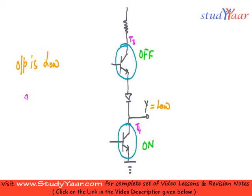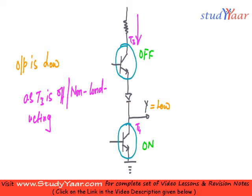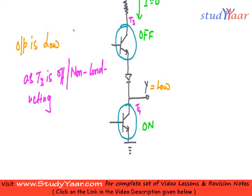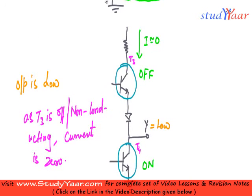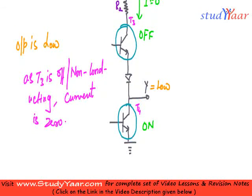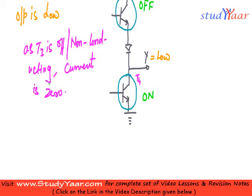Now, as T3 is off, or in other words non-conducting, what I get is almost zero current over here. So I am going to say your current I is almost equal to zero. Since current is almost zero, your power dissipation across this R2 is very less. Therefore, when output is low in a totem pole configuration, the power dissipation is very low.